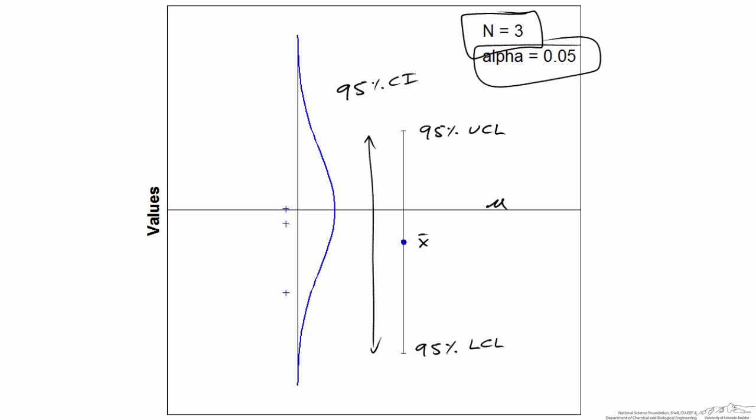So if I rerun this, I would collect three more samples, but they wouldn't be in the same location. They'll be randomly distributed over this normal distribution. So things are going to look different every time I run the simulation. And what I want you to pay attention to is the number of times that the confidence interval does not contain the population mean. What this means is when I run the simulation over and over again, 95% of the time the population mean will be within these error bars.